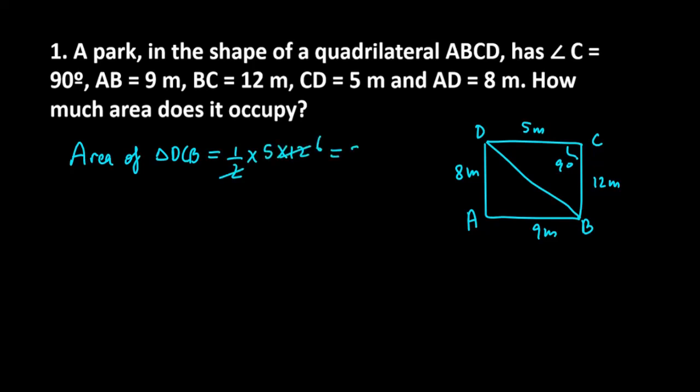Second, we can find the area of triangle ADB. But how? Because we don't have the value of DB. So first we need to find DB.